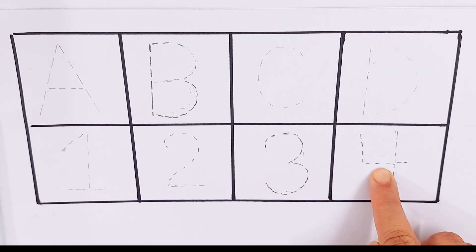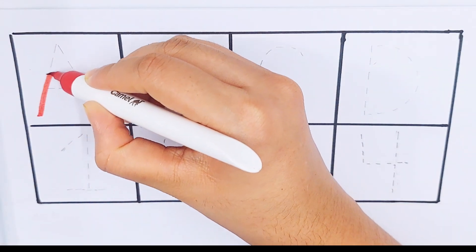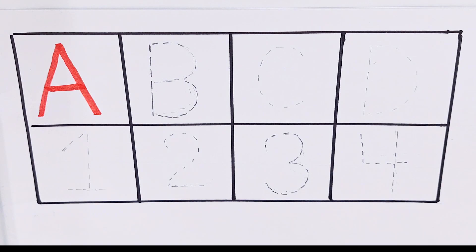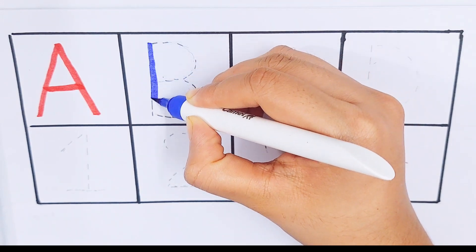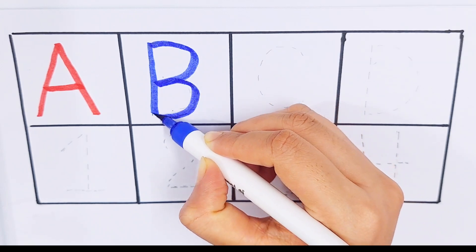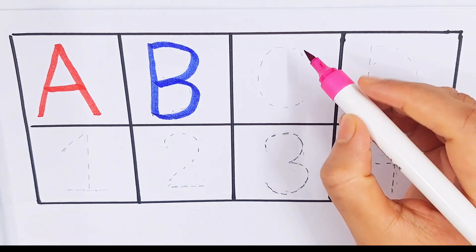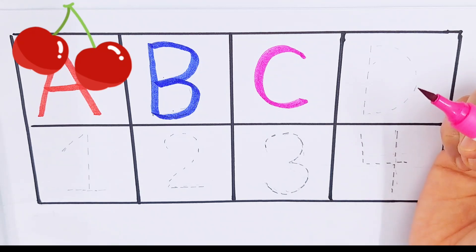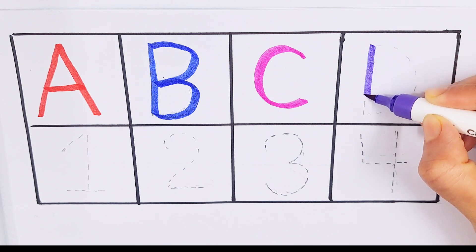Three, four. Red color, A, A for avocado. Dark blue color, B, B for blueberry. Purple color, C, C for cherry. Violet color, D, D for doll.